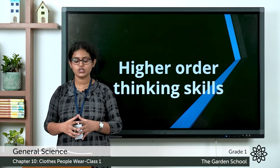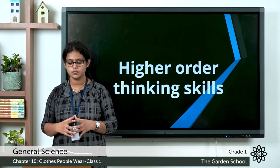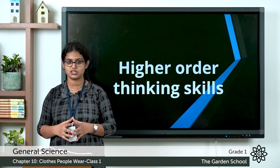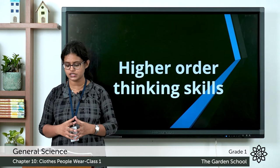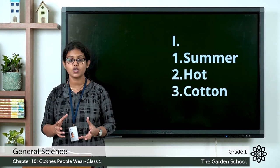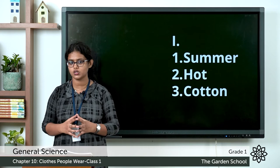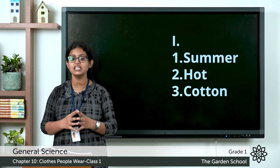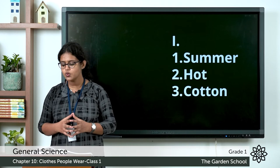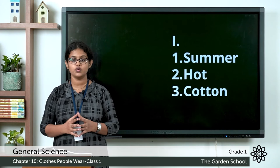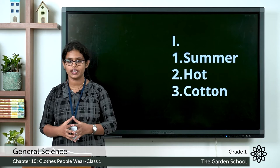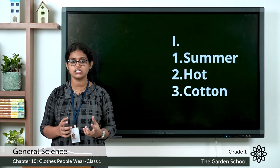Next is the higher-order thinking skills section. Observe the pictures and answer the questions. First picture: you can see two kids holding an umbrella and they are sweating. Question 1 — which season does this picture show? It is the summer season. Question 2 — how do you feel in this season? You feel hot. Question 3 — what kind of clothes do we wear? We wear cotton clothes.